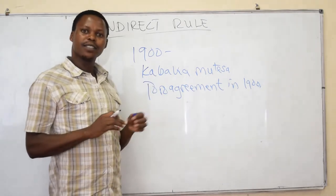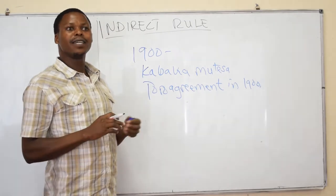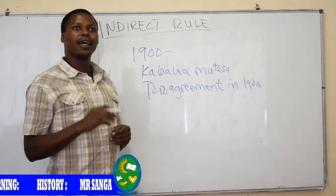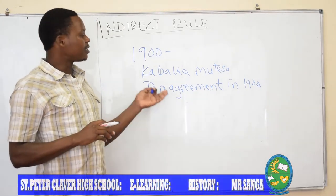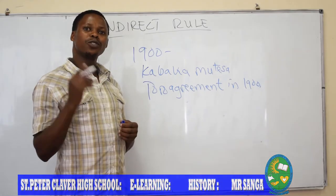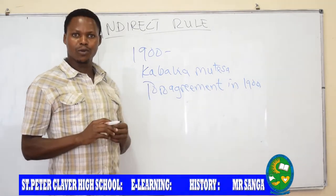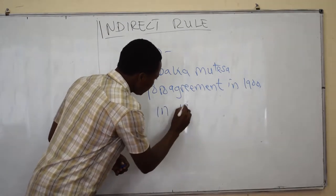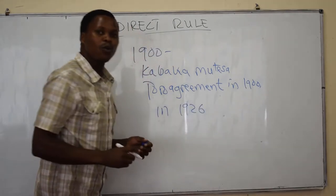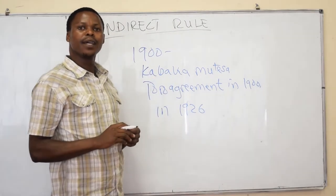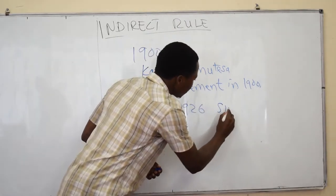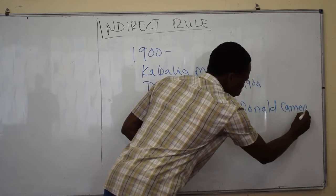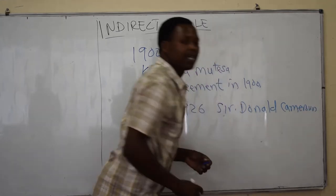After that, Indirect Rule was introduced in other parts, especially in Tanganyika, after the First World War when Tanganyika was handed to the British. In Tanganyika, the one who introduced Indirect Rule was Sir Donald Cameron, in 1926.